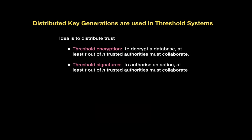Two classic places where DKGs are used all the time are threshold encryption and threshold signatures. With threshold encryption, you want to decrypt something in a database but maybe don't trust just one person to decrypt because that one person could be corrupted. So here you would say that we need at least two out of three people in order to be able to decrypt the information. This also comes up in verifiable elections.